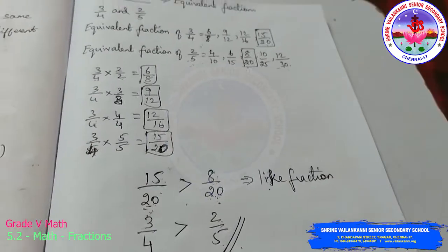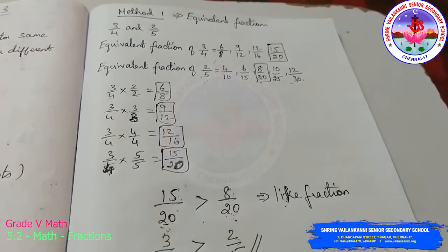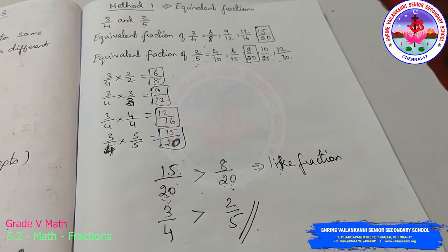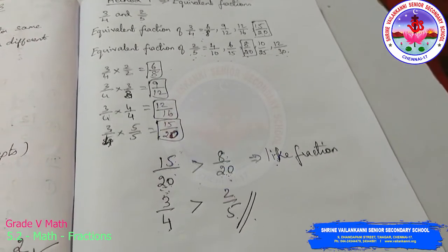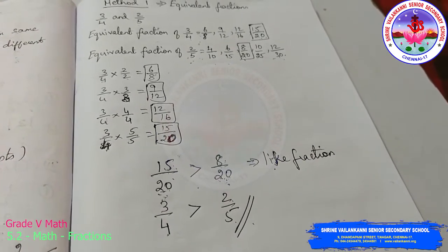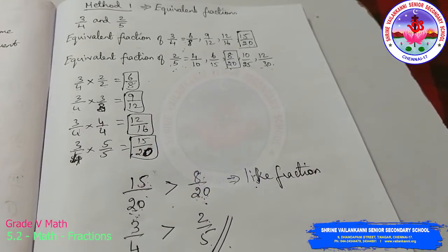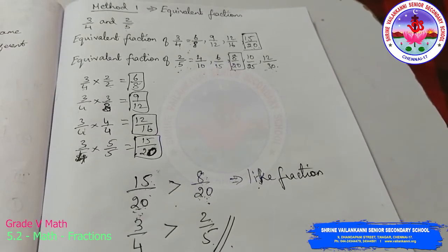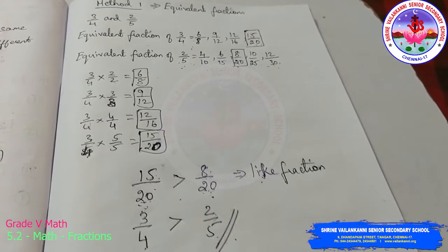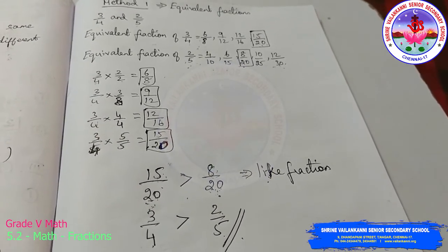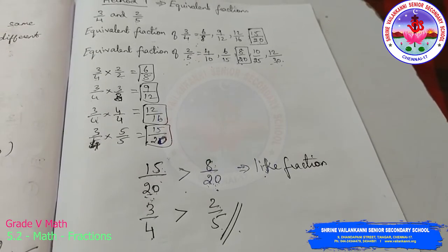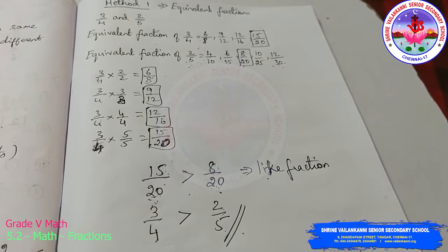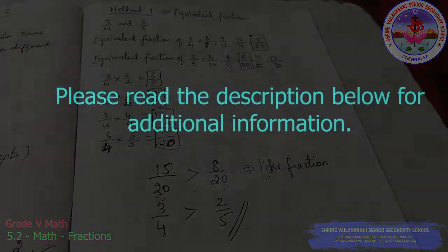This is how you use the equivalent fraction method. First find the equivalent fractions of both given fractions — at least 5 or 6 each. Then compare the denominators and find the matching value. Circle those and compare the equivalent fractions to reach a conclusion about which is bigger and which is smaller. We will see the second method — the LCM method — in the next video. Thank you, children.